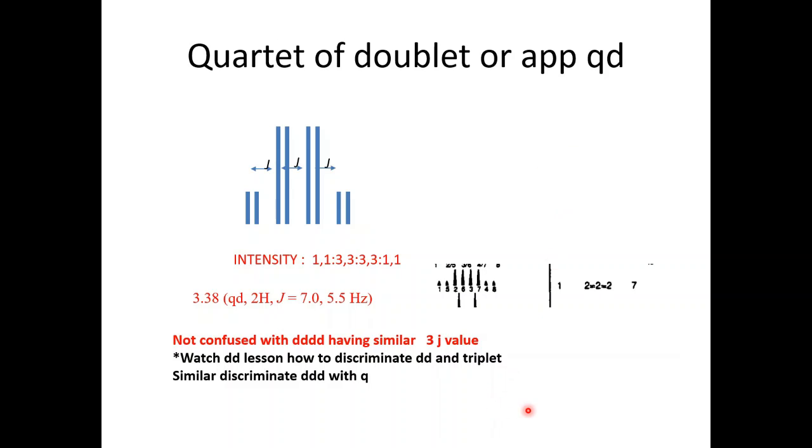So when you have DDD types of signal, you will also observe when you have 3 J value constant and 1 J value is different. You will observe these also in cyclic systems or cyclic epoxide, some ester, cyclic ester. So take care about that. So this is a separate lesson for apparent quartet of doublet. If you are not sure about that, just click on the link. You will find the apparent quartet of doublet.